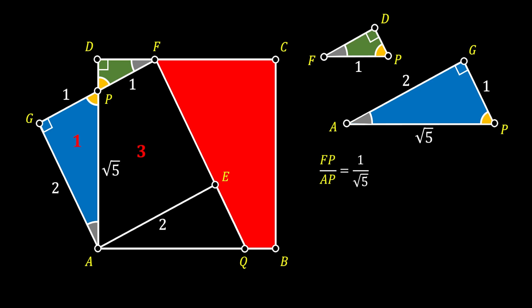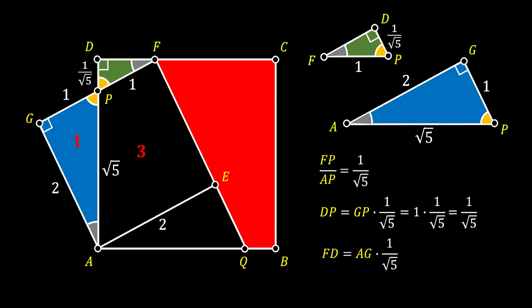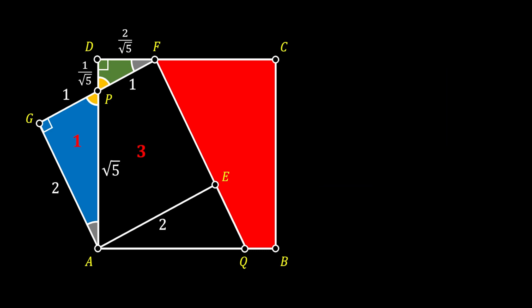We can use this factor to find the other sides of the small green triangle. In order to find the side DP of the smaller triangle, we multiply the side GP of the big triangle by the factor of similarity of one over the square root of five, giving us DP equal to one over the square root of five. We are not going to rationalize this because it will cancel out later. The side FD of the small triangle equals side AG times the factor of similarity, giving FD equal to two over the square root of five.